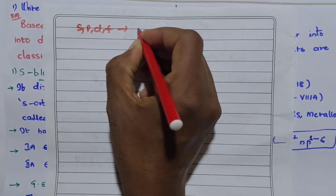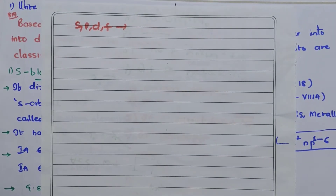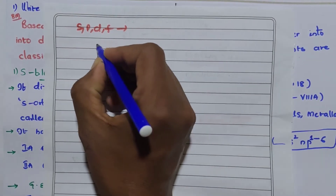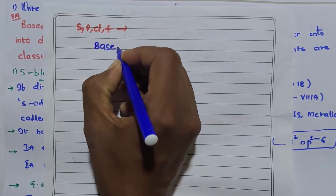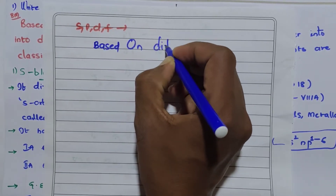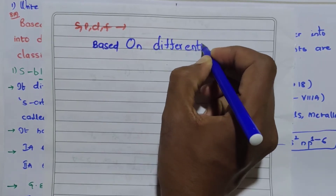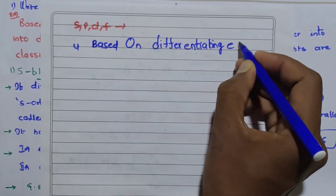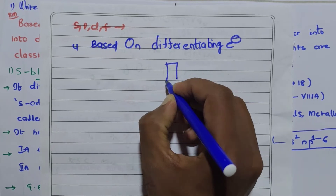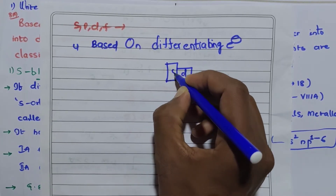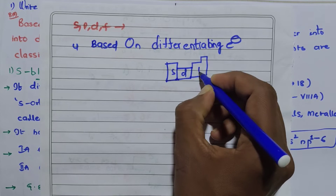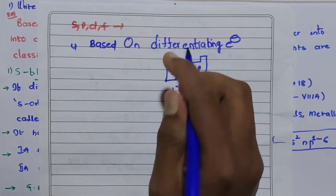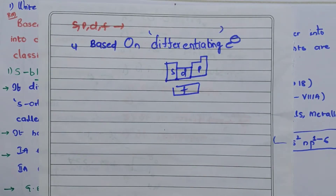First, why are we classifying the periodic table into 4 blocks? This is worth two marks. How we classify the periodic table into 4 blocks — it is based on the differentiating electron. So the differentiating electron is the key concept here.